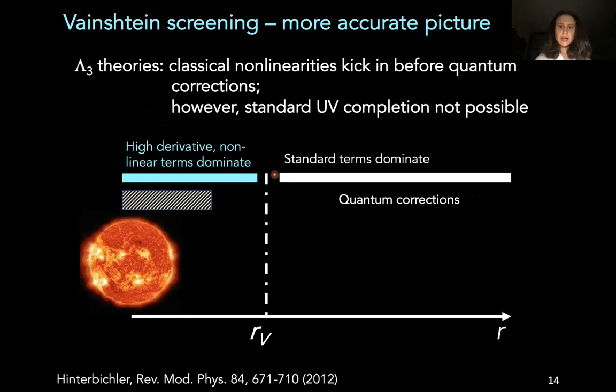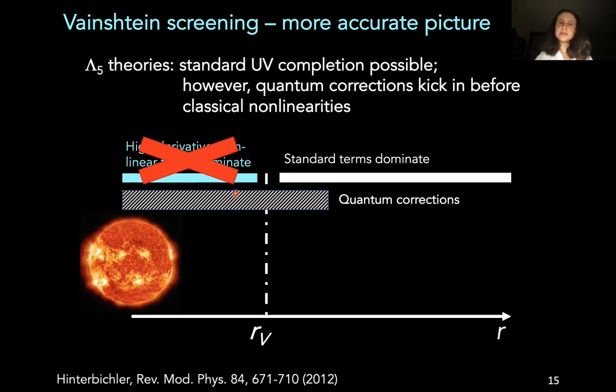And for theories with Vainshtein screening, you can distinguish between two main scenarios. The first is that of the so-called lambda 3 theories. So in this case, you expect your classical non-linearities to kick in before your quantum corrections become important. However, the standard way we have our UV completing theories is not possible. And the second scenario is that of the so-called lambda 5 theories. So in this case, the standard UV completion is possible. However, you have the suspicion that your quantum corrections may become important before your classical non-linearities do.